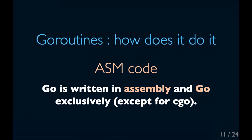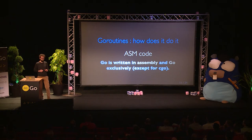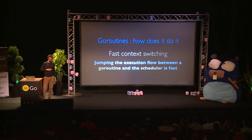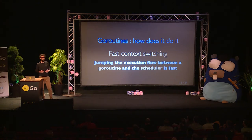So, GoRoutines — how does it do it? The first answer is ASM code. Go is written with assembly and Go exclusively, except for the CGo module. The context switching: when a routine has to get back to the scheduler, that's what we call a context switch. In Go, this is really fast.